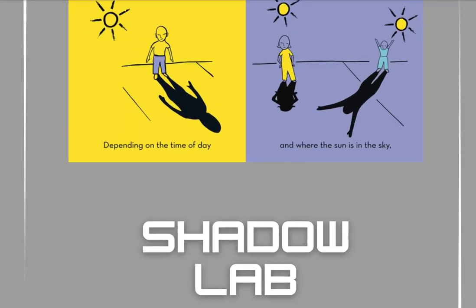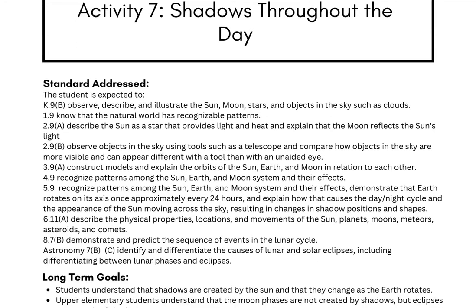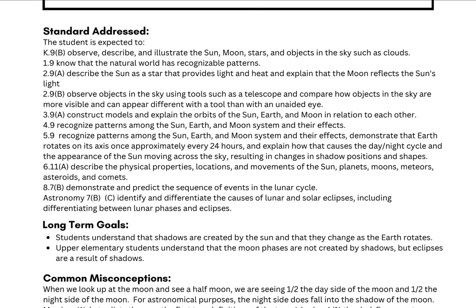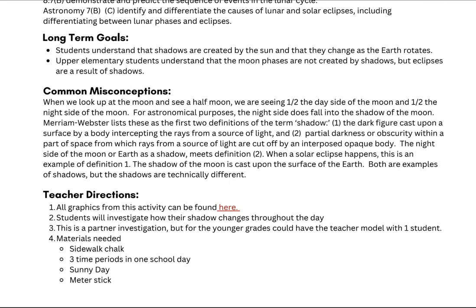As we're looking at this lesson, one thing to note is that this is really aligned more toward fourth grade. Students in K-3 might need a little bit more scaffolding and may not have as much background knowledge. You have standards for kindergarten through high school astronomy to include in your lesson plans, as well as long-term goals — including what you want upper elementary students to understand: that moon phases are not created by shadows, but eclipses are a result of shadows.